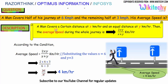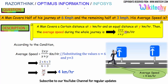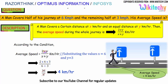A man covers a certain distance at x km per hour and an equal distance at y km per hour. The average speed during the whole journey is 2xy divided by x plus y km per hour.